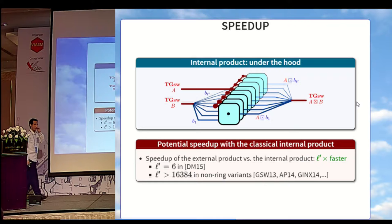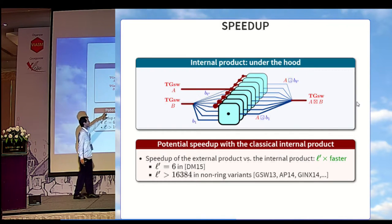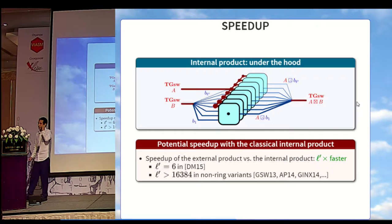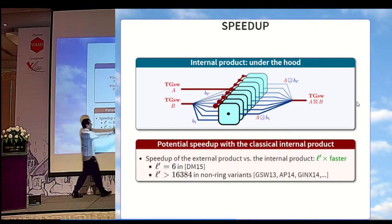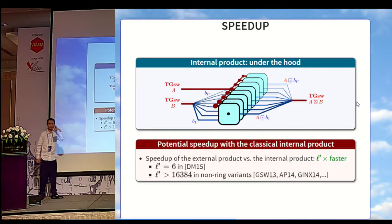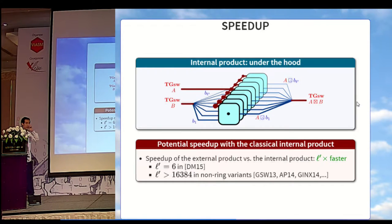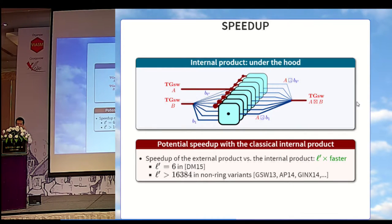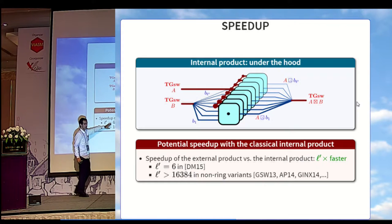Just to give you an idea of the potential speedup: now that the external product is defined, if you look at what the internal product is doing under the hood, you will realize that it computes L independent external products, one for each coordinate of B. If we can manage to get the same semantic using only one of them, we can achieve a potential speedup of a factor L. Also, if we use the external product, we can use the full power of the continuous message space instead of being restricted to one particular row of a GSW sample. In the ring variant of Ducas-Micciancio, the speedup would be a factor six, but in all other non-ring variants, the speedup would be much larger than 16,000.